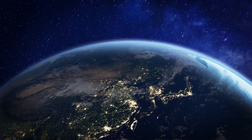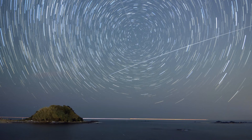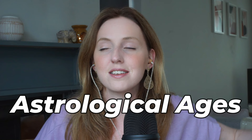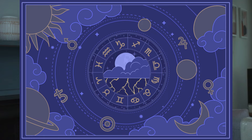Remember the procession of the equinoxes discussed in the schools of astrology video? The earth moves one degree every 72 years or so. The fixed stars also move due to diurnal motion, which accounts for the rising and setting of stars as the earth spins on its axis. It was Greek astronomer Hipparchus who discovered the precession of equinoxes. You can read all about the astrological ages in my astrology guide.